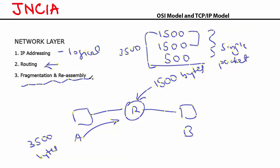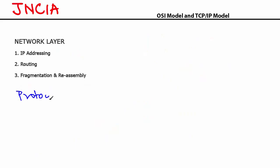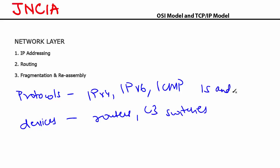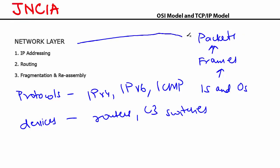Protocols that operate at your network layer include IPv4, IPv6, and ICMP. Devices that operate at your network layer include routers, layer 3 switches, and firewalls. The data that was in the form of ones and zeros at the physical layer got converted into frames at the data link layer, and those frames get converted into what is known as packets as they reach the network layer.